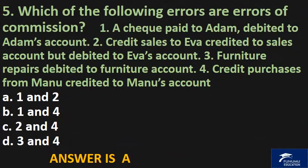Which of the following errors are errors of commission? 1. A check paid to Adam debited to Adam's account, 2. Credit sales to Eva credited to sales account but debited to Eva's account, 3. Furniture repairs debited to furniture account, 4. Credit purchases from Mannew credited to Mannew's account. A. one and two, B. one and four, C. two and four, D. three and four. The answer is A.